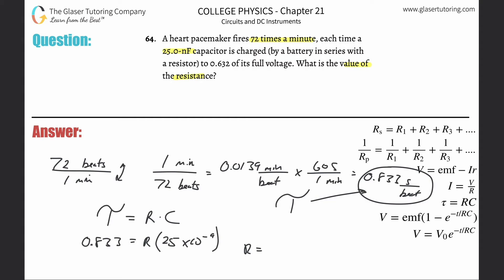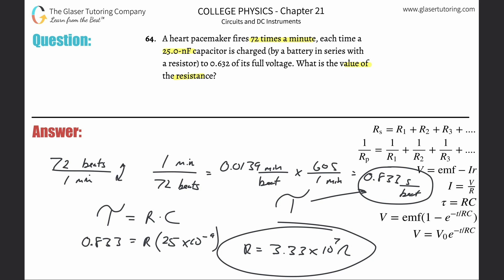That works out to 33,333,333 ohms — let me count those digits: 1, 2, 3, 4, 5, 6, 7 — so that's 3.33 times 10 to the 7th ohms, which is about 33 megaohms. Hopefully that helped — take care!